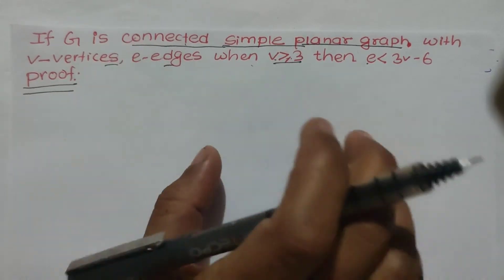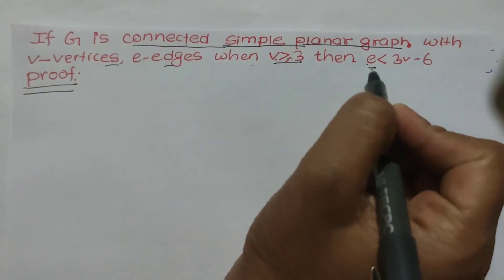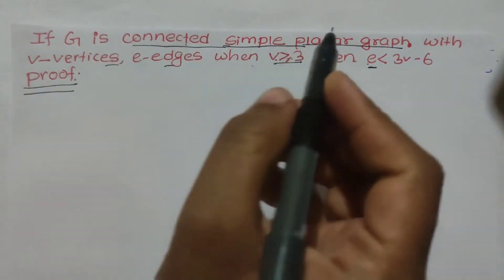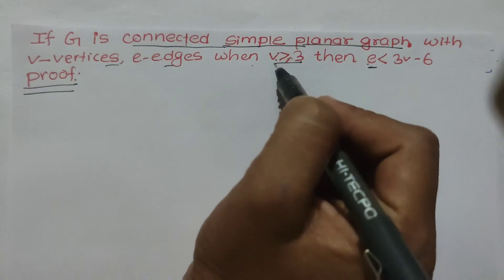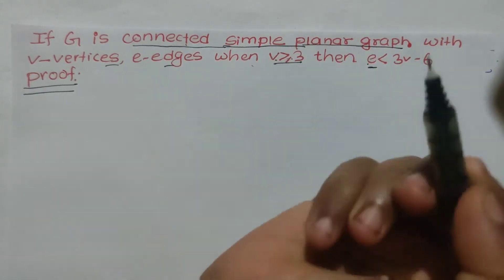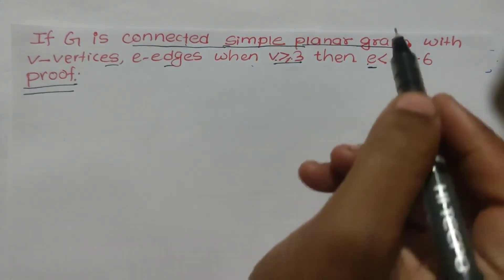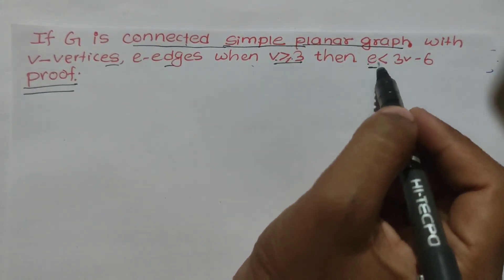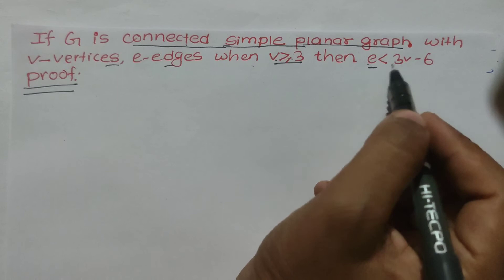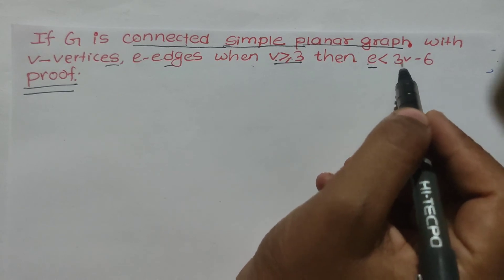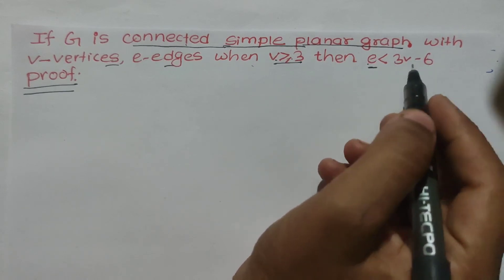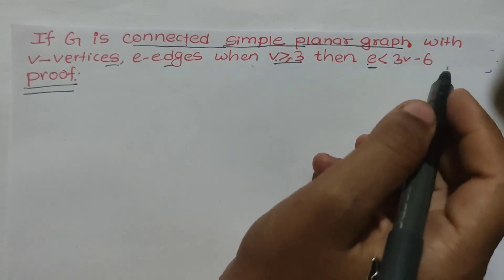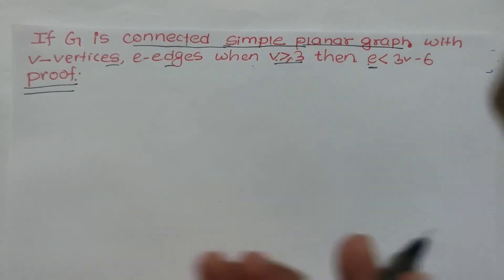In this graph, the number of edges is greater than or equal to 3V. The number of edges is less than 3 times the number of vertices minus 6.